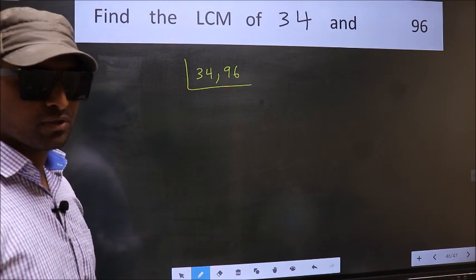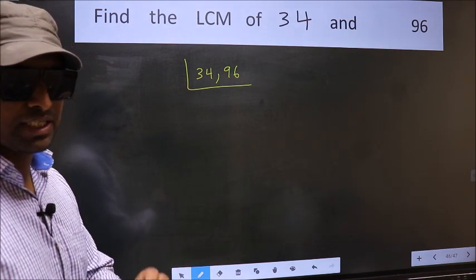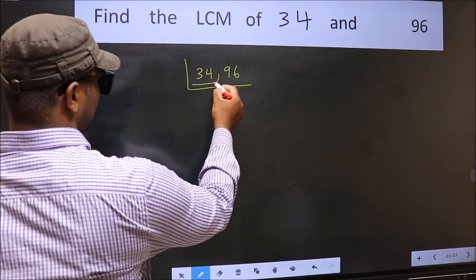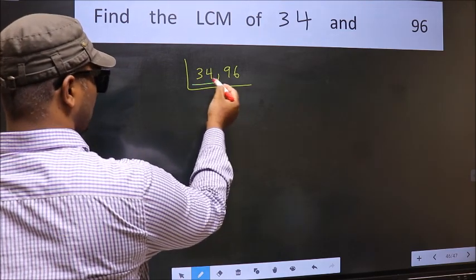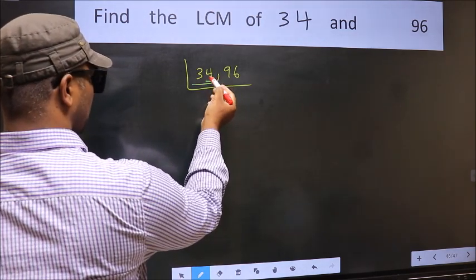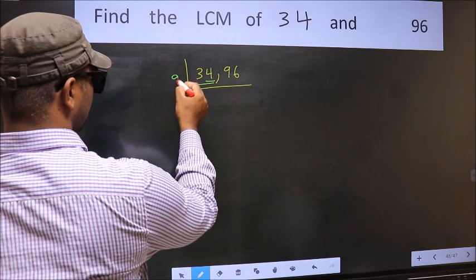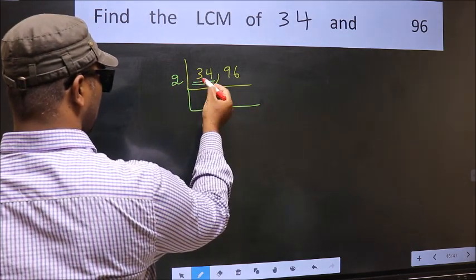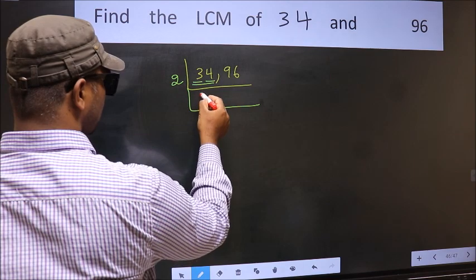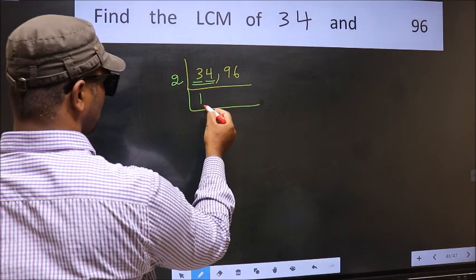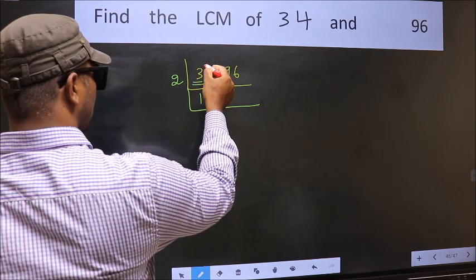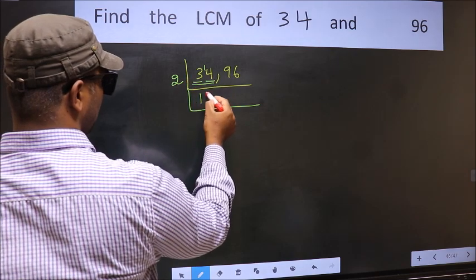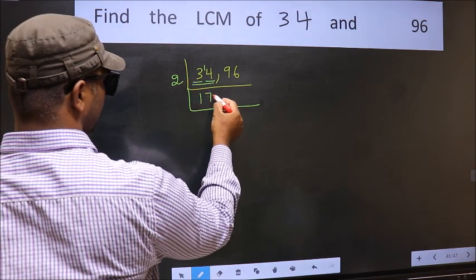Now focus on the first number, which is 34. Last digit is 4 — even, so take 2. First number is 3; a number close to 3 in the 2 table is 2. So 3 minus 2 is 1, carry forward: 14. When do we get 14 in the 2 table? 2 times 7 is 14. So 34 divided by 2 gives 17.